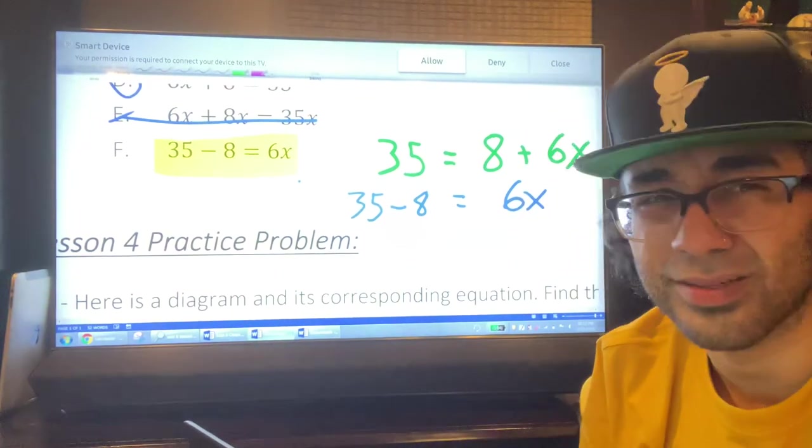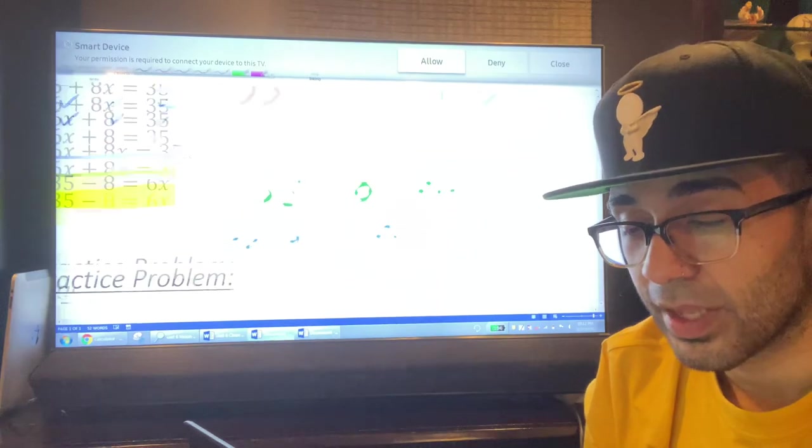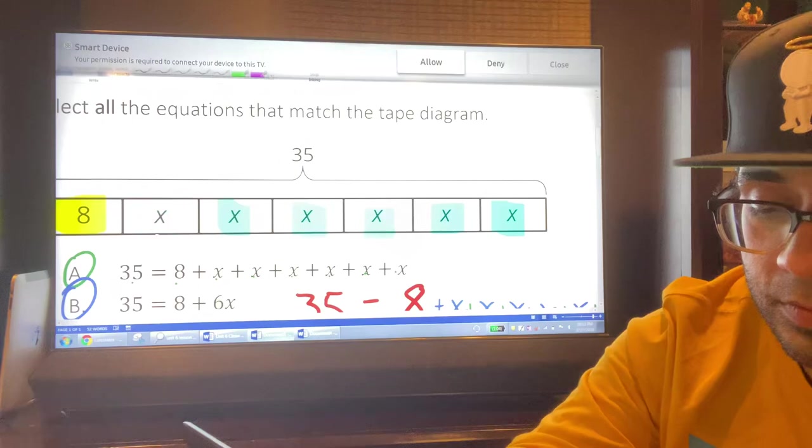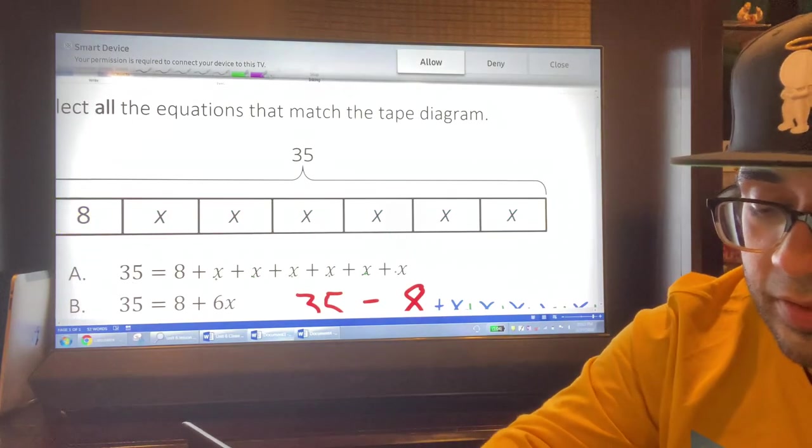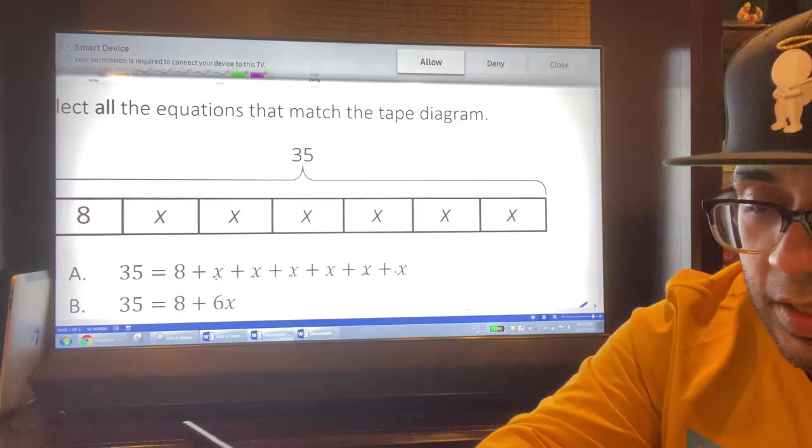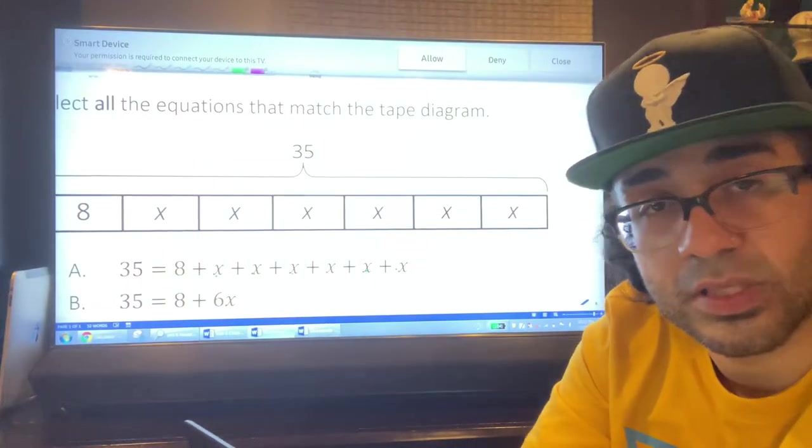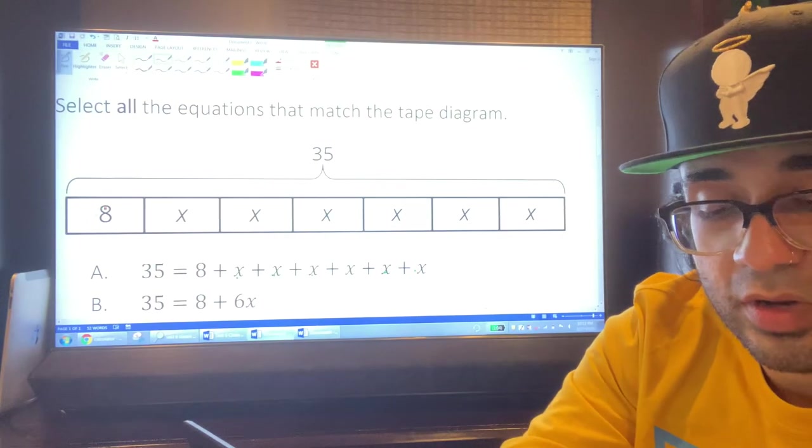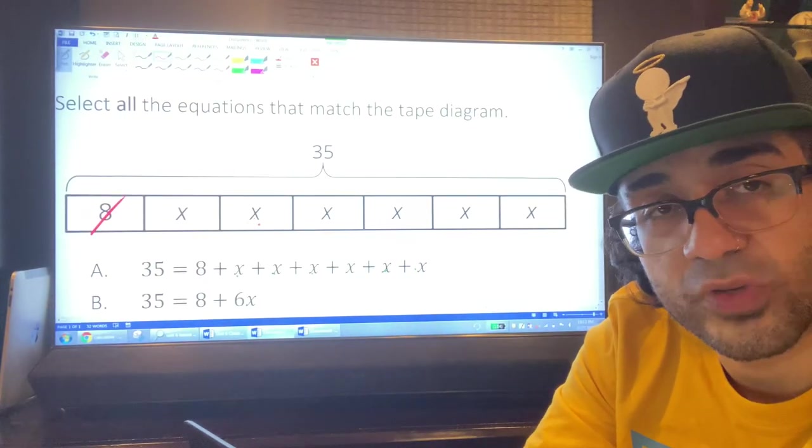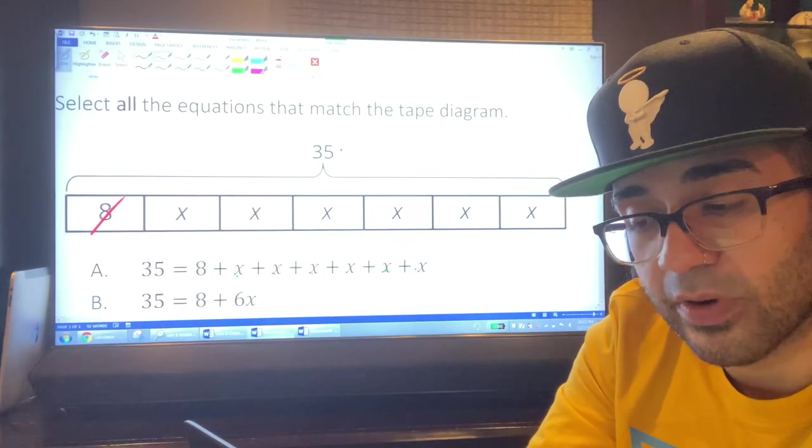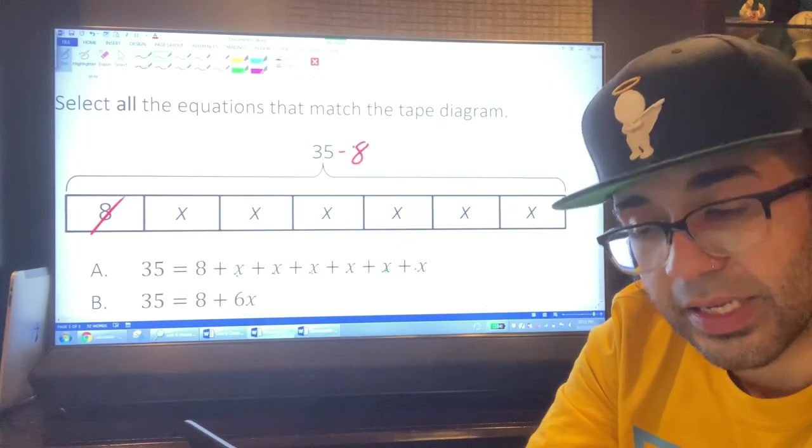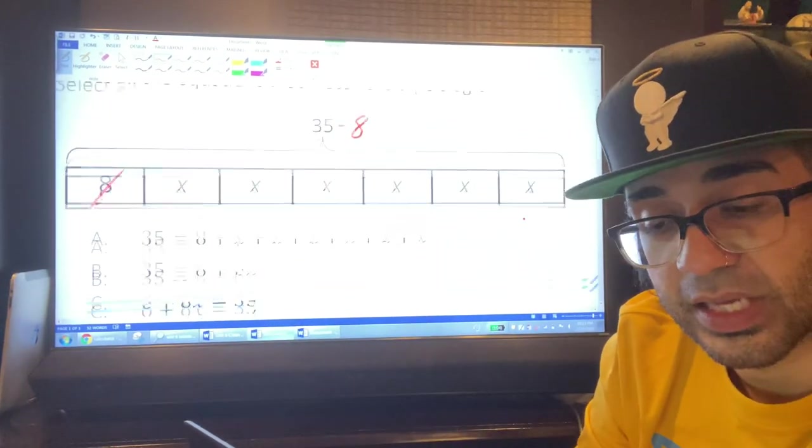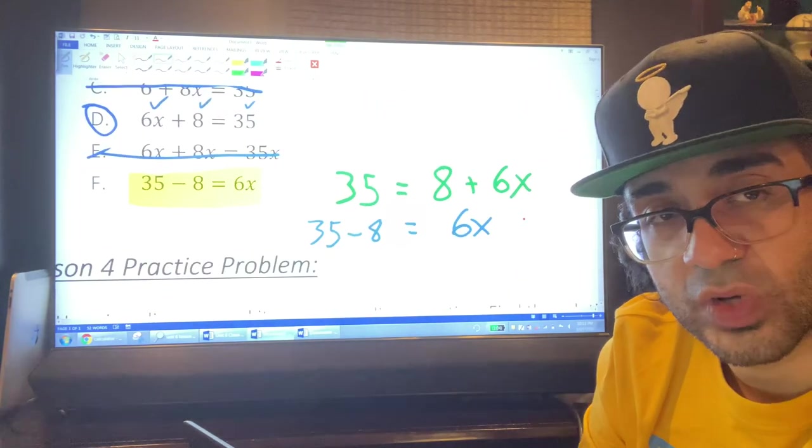The first step being: is there any addition or subtraction that can happen? And in this instance, this is a positive 8 or being added 8. I could flip them, it'd be 6X plus 8. If I took away 8 from both sides, I would start the process of getting 6X alone. I'm a big fan of showing work. So what I'm going to do is write out what this really means. I'm going to subtract 8 from both sides. If I subtract 8 from here, it leaves me with 6X. If I wanted to write out the process as clear as possible, I would write it out as 35 minus 8 equals 6X. And that is why this last equation here matches the tape diagram.